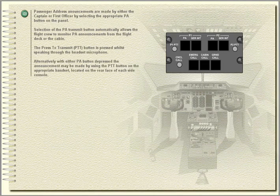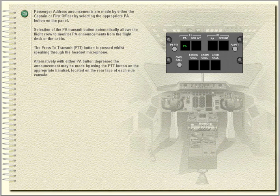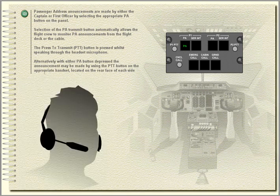Passenger Address, Service Interphone, Crew Call. Passenger address announcements, service interphone communications, and crew call paging are integrated on one control panel on the centre pedestal. Passenger address announcements are made by either the captain or first officer by selecting the appropriate PA button on the panel. Selection of the PA transmit button automatically allows the flight crew to monitor PA announcements from the flight deck or the cabin. The press-to-transmit button is pressed while speaking through the headset microphone.